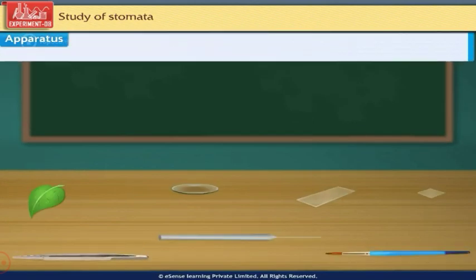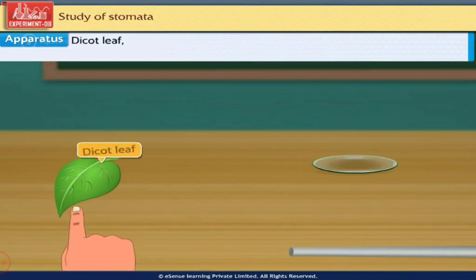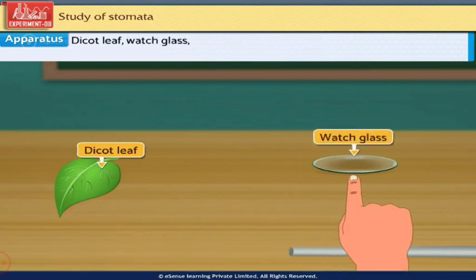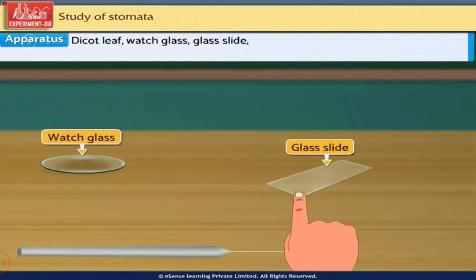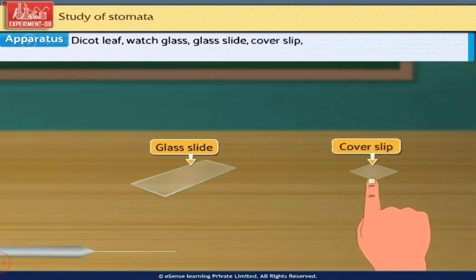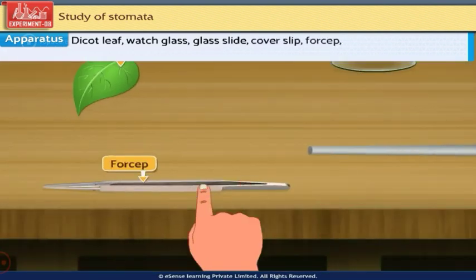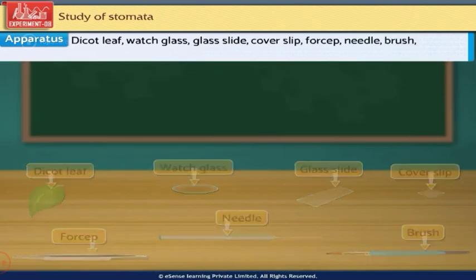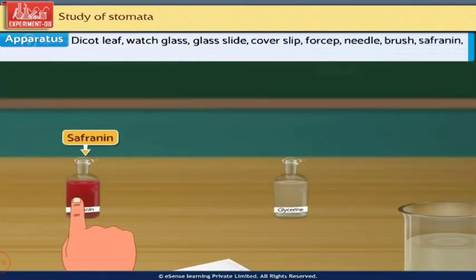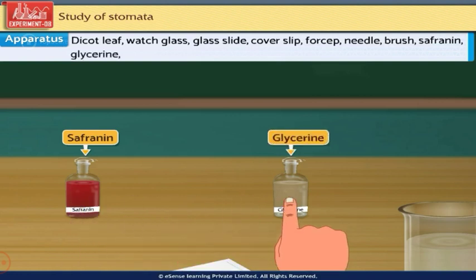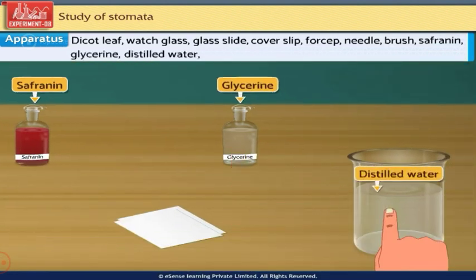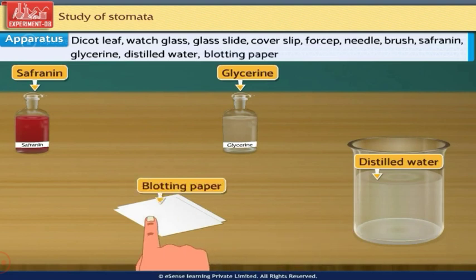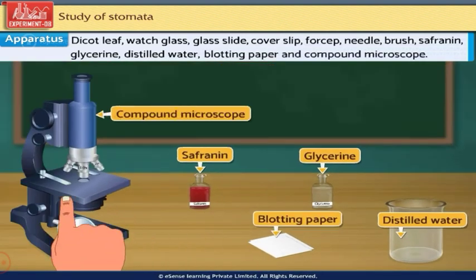The materials and apparatus required to perform this experiment are a dicot leaf, watch glass, glass slide, cover slip, forcep, needle, brush, saffronine, glycerine, distilled water, blotting paper and a compound microscope.